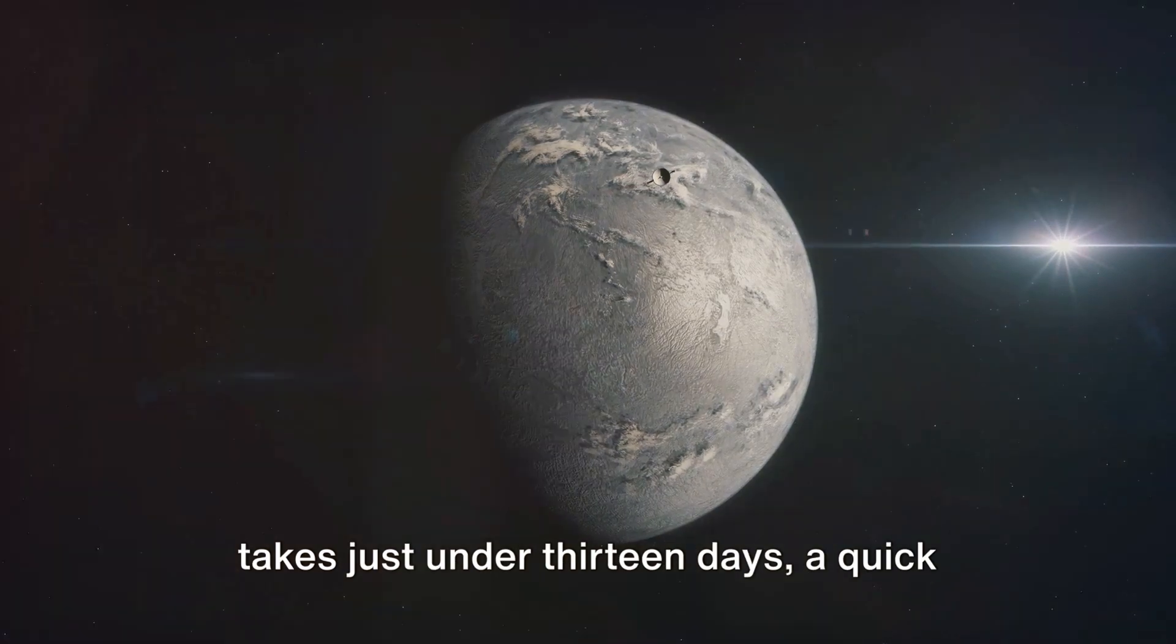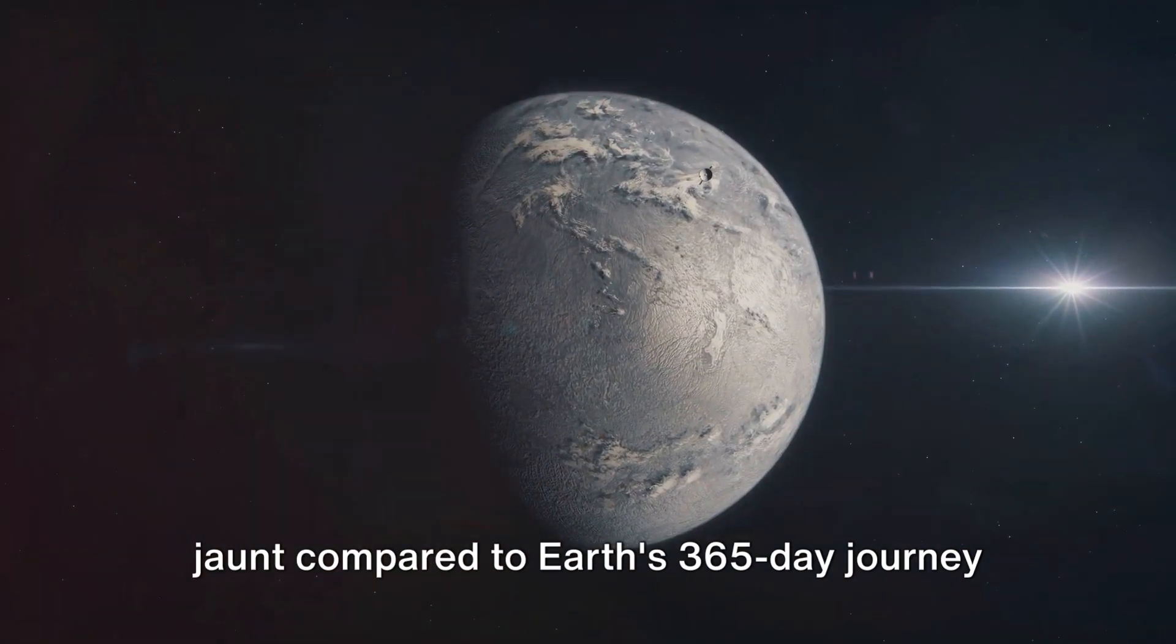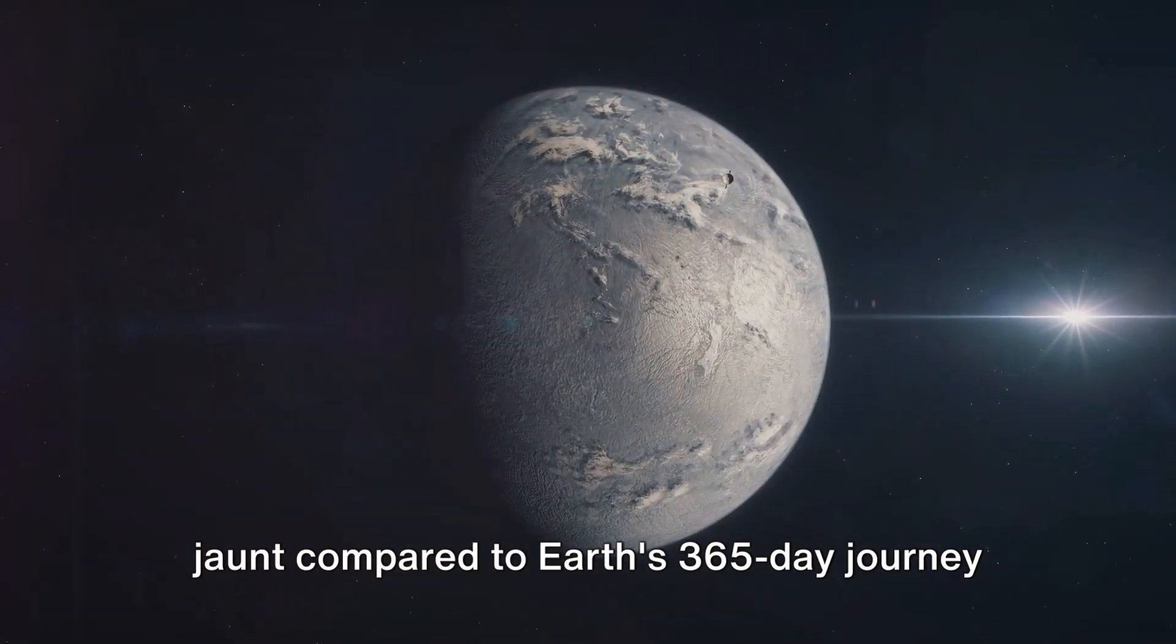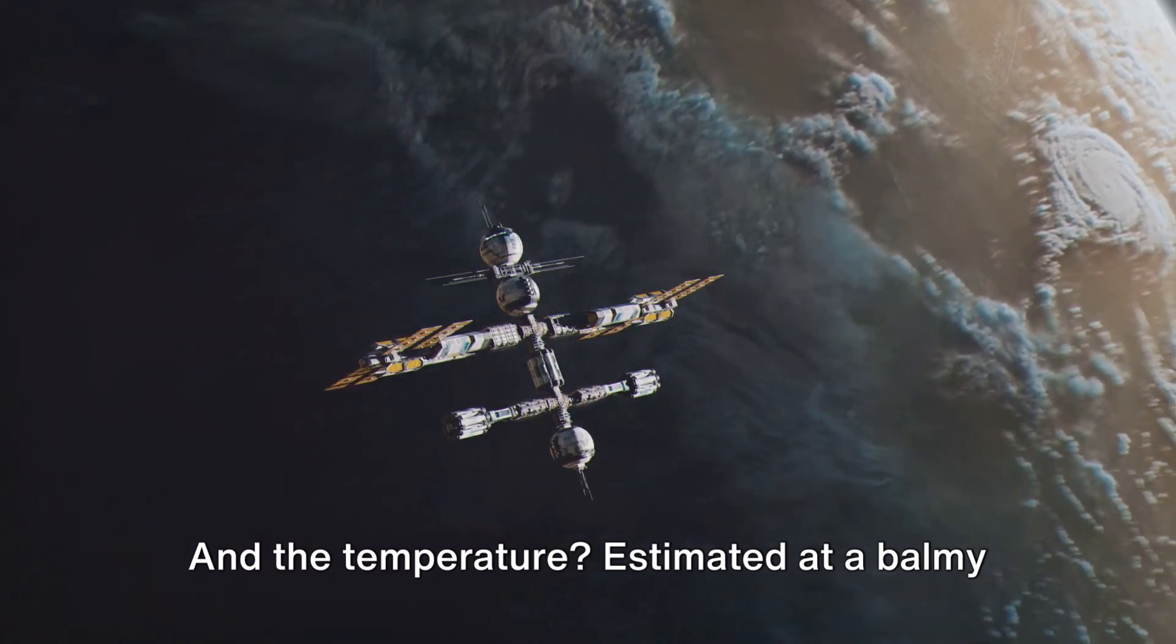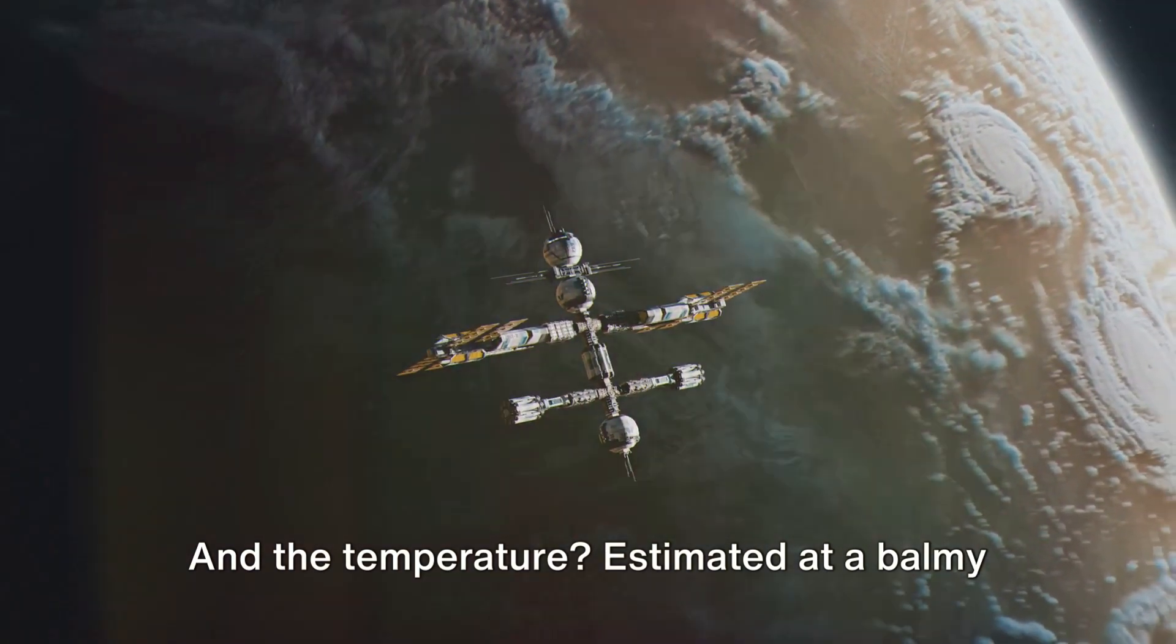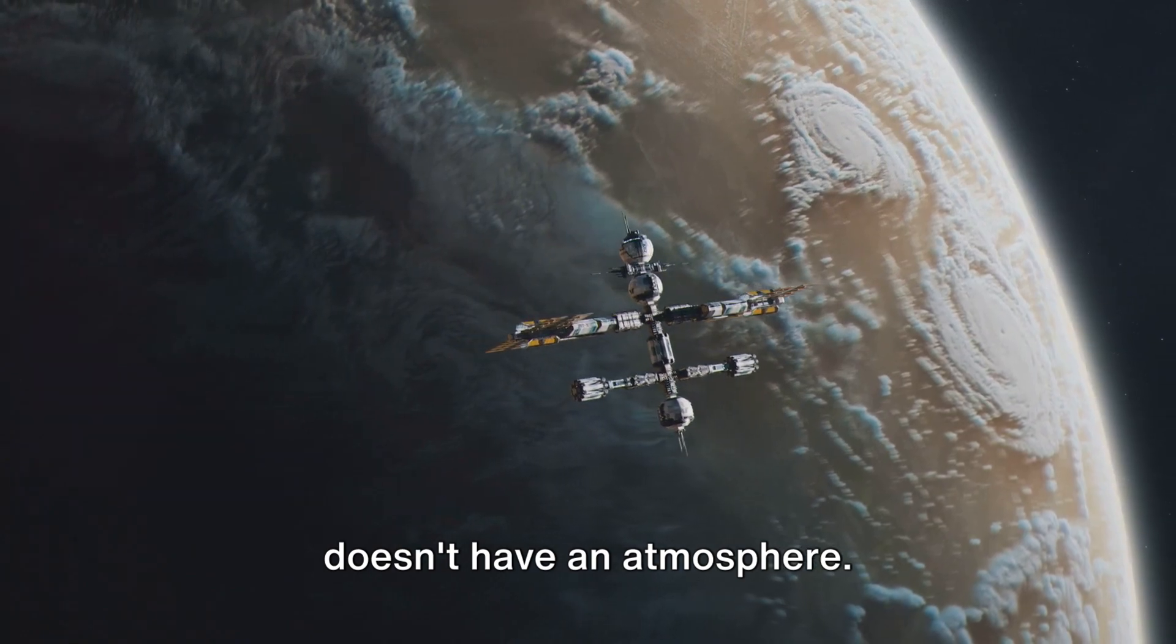Gliese 12b's orbit around its host star takes just under 13 days, a quick jaunt compared to Earth's 365-day journey around the Sun. And the temperature? Estimated at a balmy 107 degrees Fahrenheit, assuming it doesn't have an atmosphere.